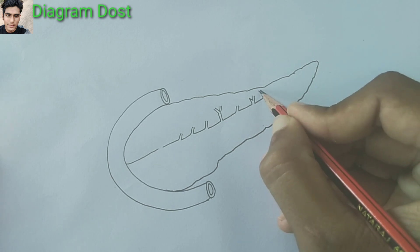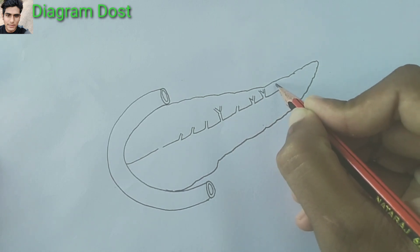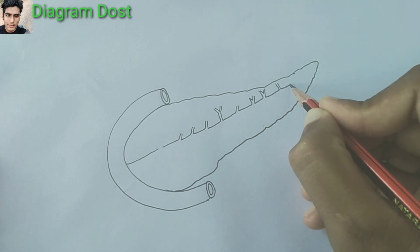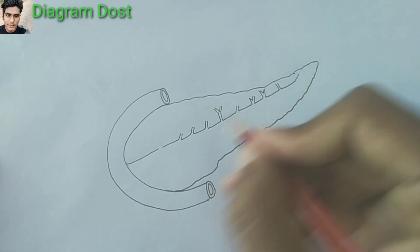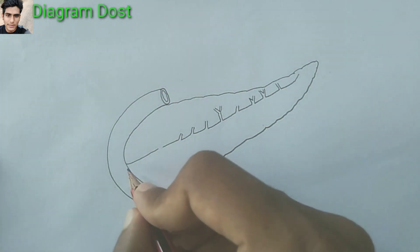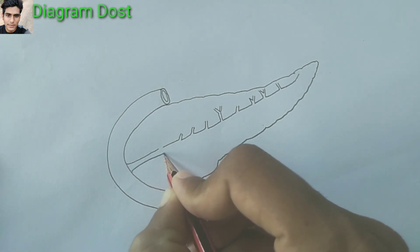In this duct, the pancreatic juice is present. After formation of pancreatic juice, the juice comes to the intestine through this duct.